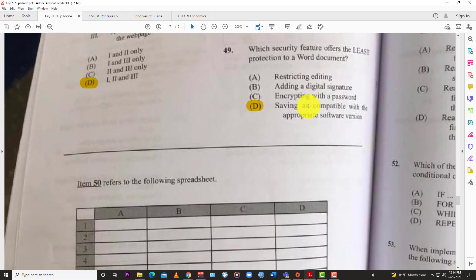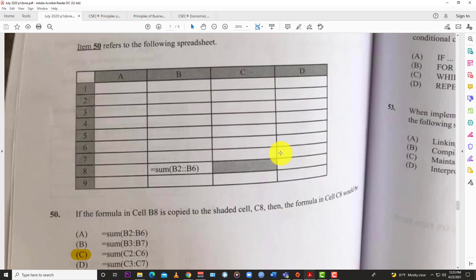Question 49: Which security feature offers the least protection to a word document? You have A, restricting editing; B, adding a digital signature; C, encrypting with password; or D, saving as compatible with the appropriate software version. That doesn't really offer much security indeed. A person just has to get the version and they can open it. Even if you have an older version, you might open it. It might be a little disjointed, but it's still opening.